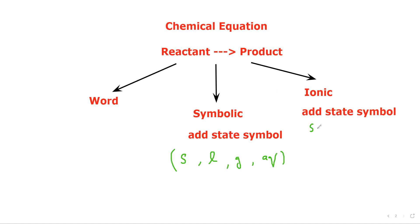For a word equation, we simply mention what the reactants are and what product is formed. We will compare both by writing a word equation and a symbolic equation at the same time, and at the last we will discuss the ionic equation. The first part is writing a word and symbolic equation.